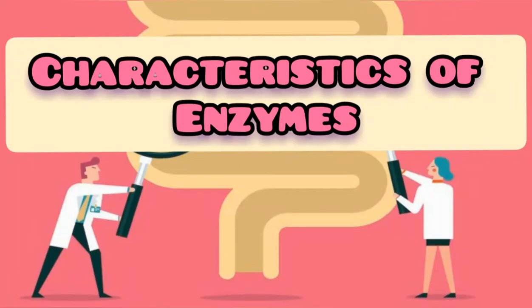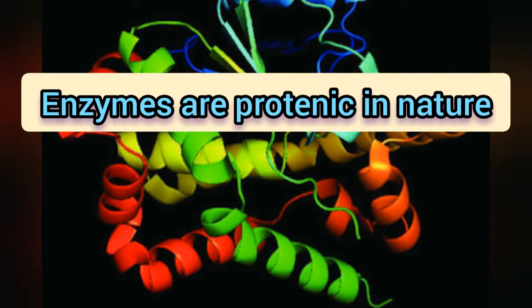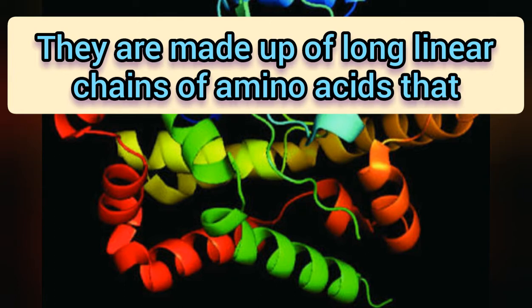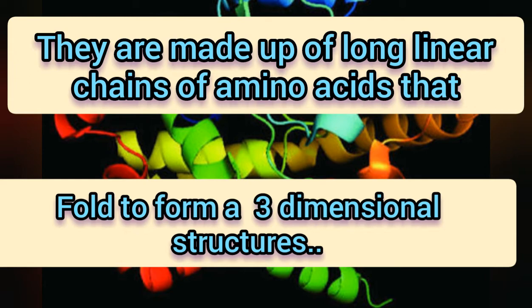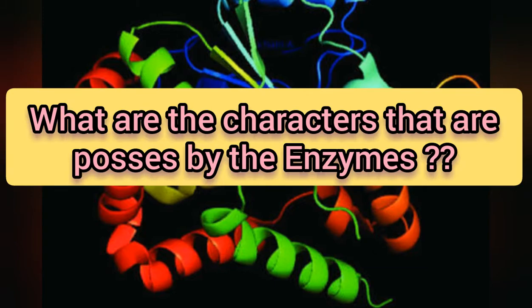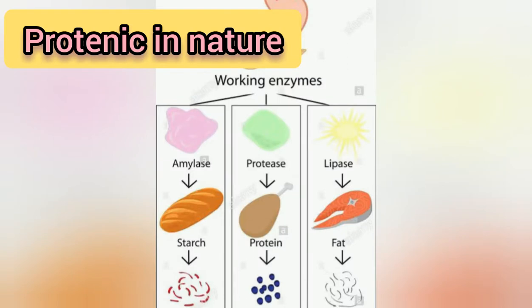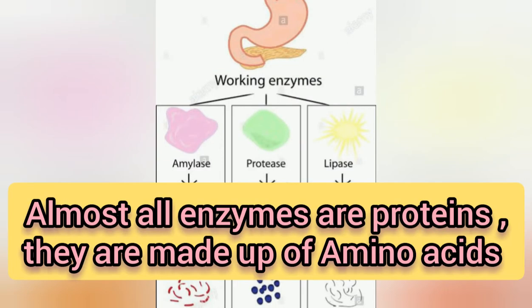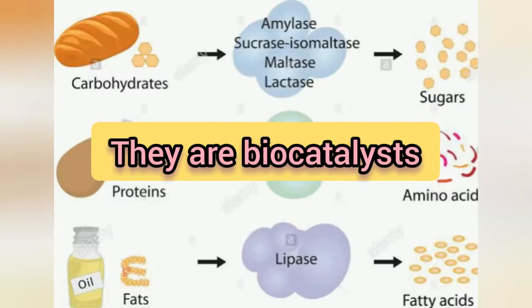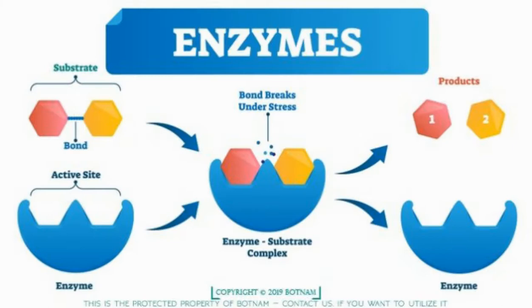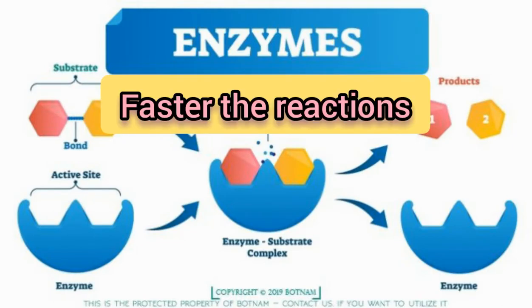Welcome back students. Today the topic is characteristics of enzymes. As we know, enzymes are proteinic in nature and they are made up of long linear chains of amino acids that fold to form three-dimensional structures. Let us discuss what characters are possessed by enzymes. Almost all enzymes are proteins — they are made up of amino acids.